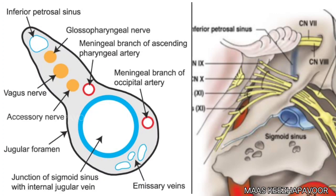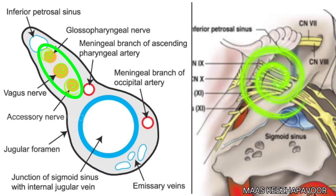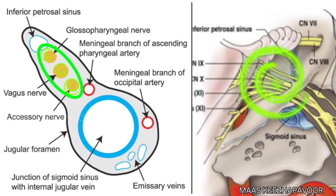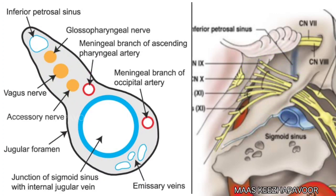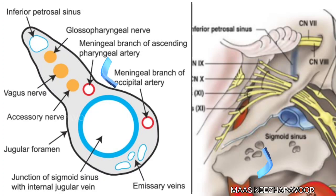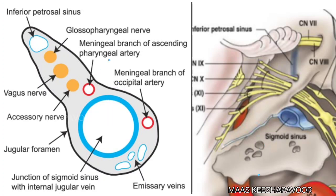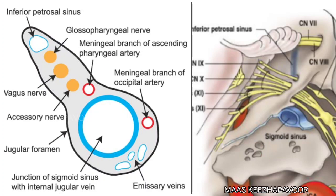In the middle compartment, the 9th, 10th, and 11th cranial nerves, meningeal branch of ascending pharyngeal artery, and emissary vein pass. The sigmoid sinus passes through the posterior compartment and continues as the internal jugular vein.